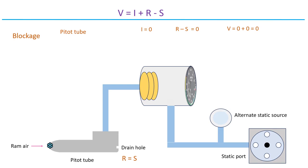When R equals S, R minus S becomes zero. Adding zero to zero is still zero, the airspeed will read zero.